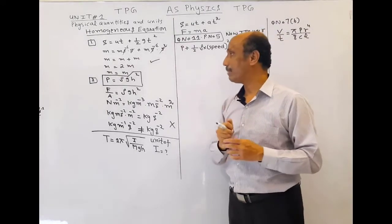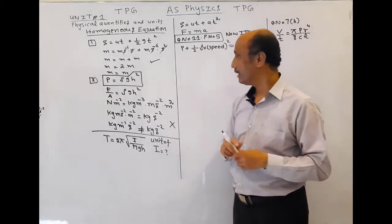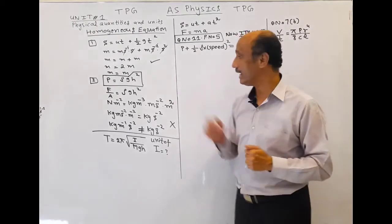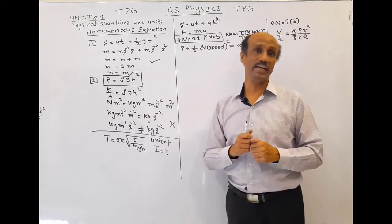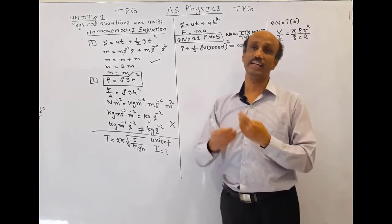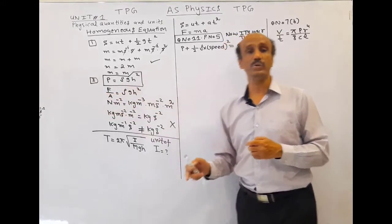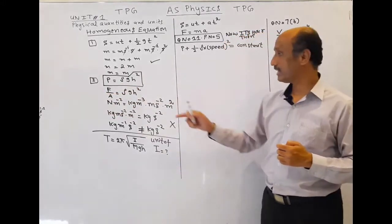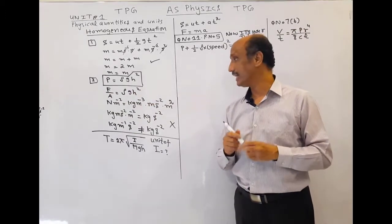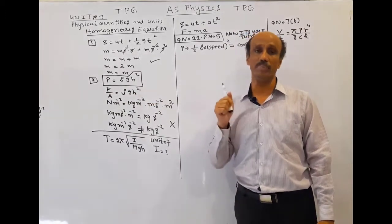Second example: p = ρgh². Here p is the pressure, pressure equals force over area, density ρ is mass per unit volume, g is acceleration, and h is height. For force we write Newton over meter squared, then density is kilogram over meter cubed, the value of g is ms⁻², and we have meter squared for h².